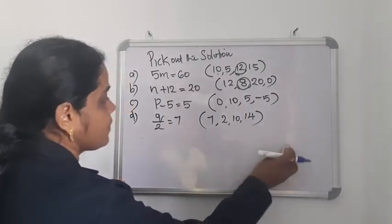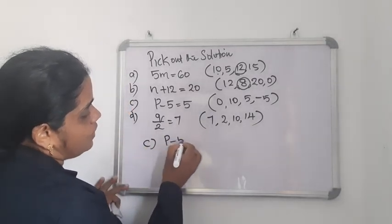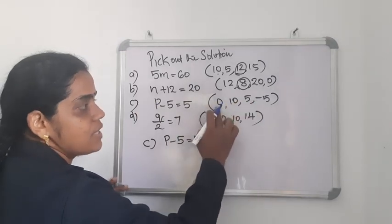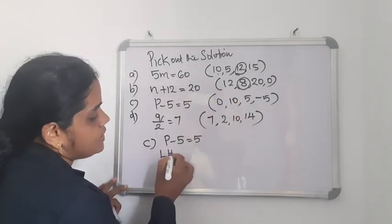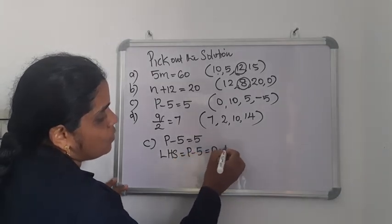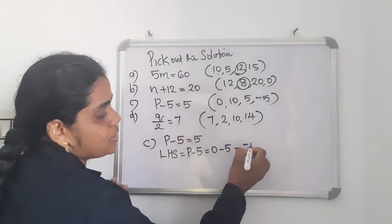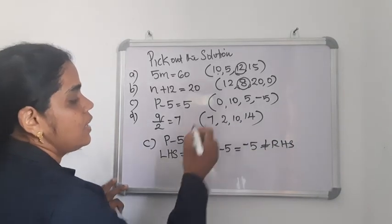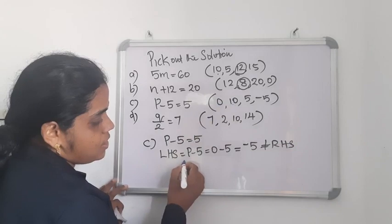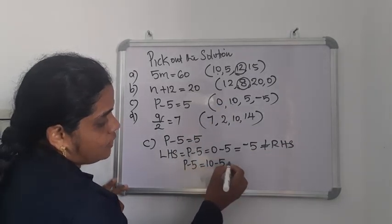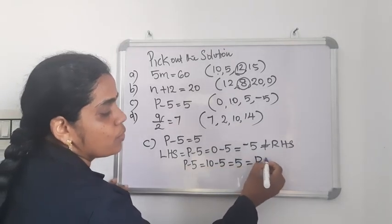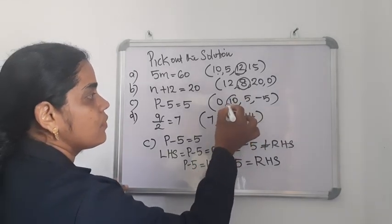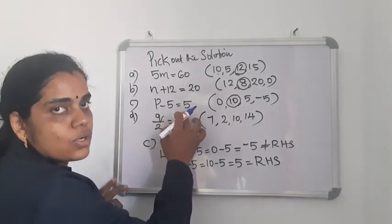C question: P minus 5 equal to 5. We try option 0 first: 0 minus 5 is negative 5 — not equal to plus 5, so not the solution. Next option 10: 10 minus 5 is 5 — equal to RHS. So the value of the variable is 10, since 10 minus 5 equal to 5.